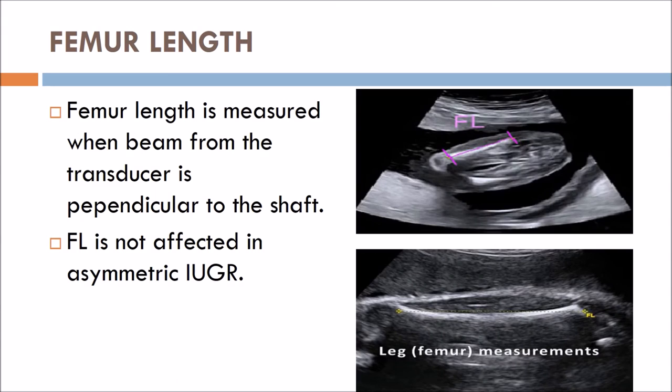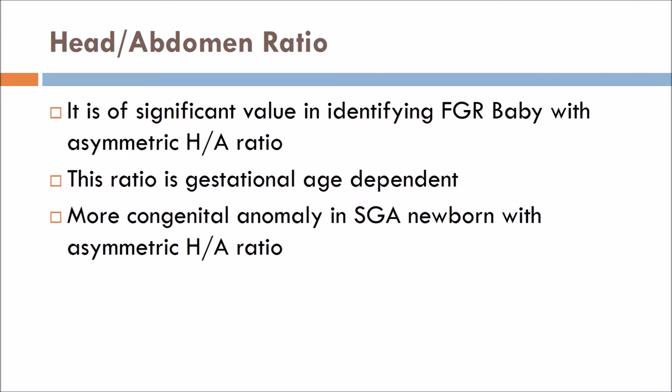Femur length is measured when the beam from the transducer is perpendicular to the shaft. Femur length is not affected in asymmetric IUGR. The head-to-abdomen ratio is significant in identifying growth-restricted babies with asymmetric IUGR. This ratio is gestational age dependent, and more congenital anomalies are seen in small-for-gestational-age newborns with asymmetric IUGR.